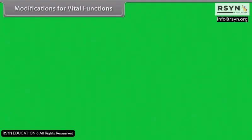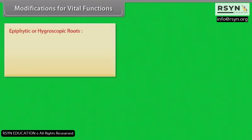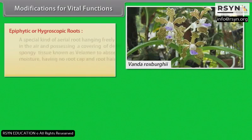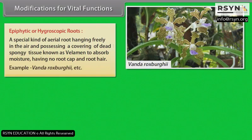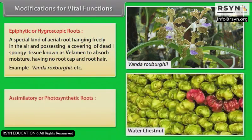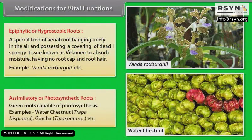Modifications for vital functions. Epiphytic or hygroscopic roots: A special kind of aerial root hanging freely in the air and possessing a covering of dead spongy tissue known as velamen, to absorb moisture, having no root cap and root hair. Example: Vanda, Orchids, etc. Assimilatory or photosynthetic roots: Green roots capable of photosynthesis. Examples: water chestnut, Tinospora, etc.